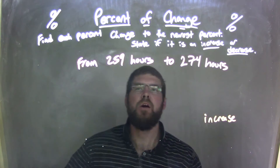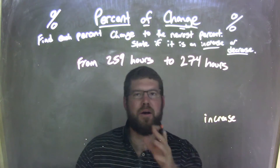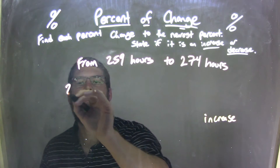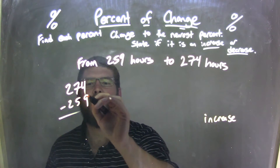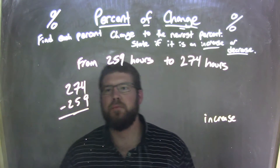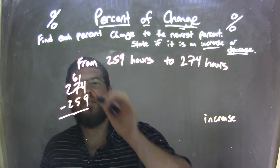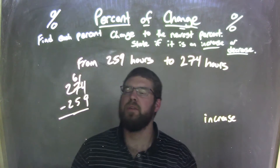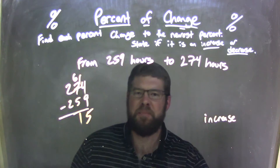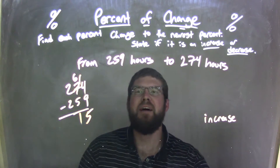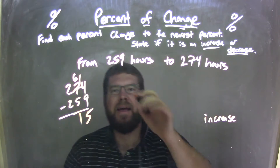Let's find the difference between these two to see how many hours it increases. So 274 minus 259 — we subtract the two, largest number first. 4 minus 9, we can't do it using the traditional method, so we borrow: 14 minus 9 is 5. 6 minus 5 is 1, and 2 minus 2 is 0. So we have a 15-hour increase from 259 to 274.